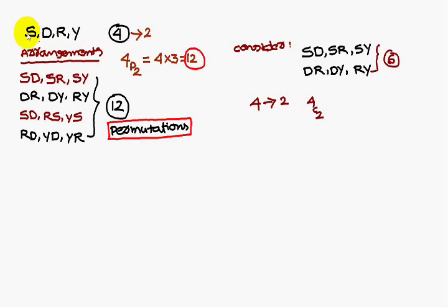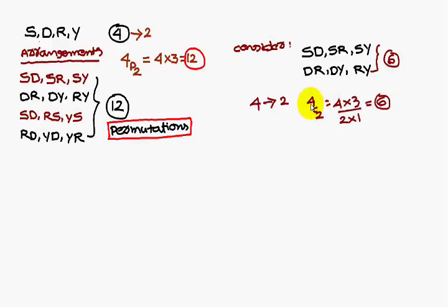So from four letters S, D, R, Y by taking two at a time, the combinations or selections is 4C2. To simplify: from 4 write two numbers — 4 into 3 in the numerator, and in the denominator write 2 into 1. Simplify that, you are going to get 6.